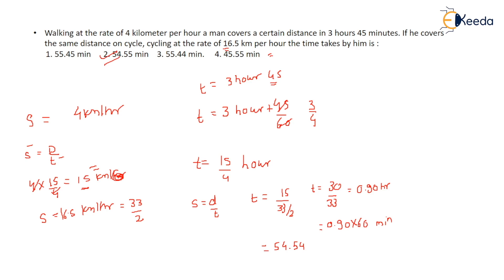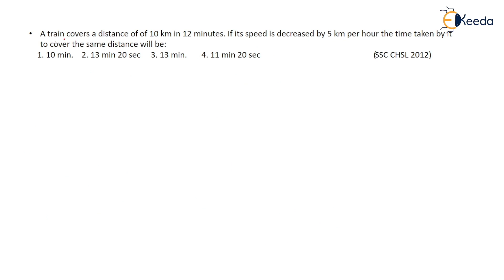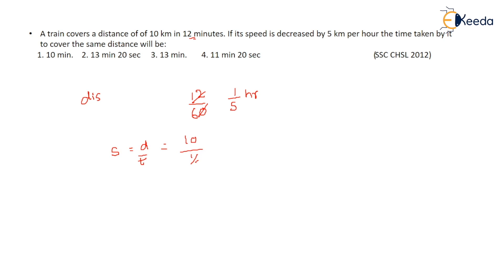That is the answer. Now the next question: a train covers a distance of 10 kilometers in 12 minutes. If its speed is decreased by 5 kilometers per hour, find the time taken to cover the same distance. Since the time is in minutes, we convert: 12 minutes = 12/60 = 1/5 hour.